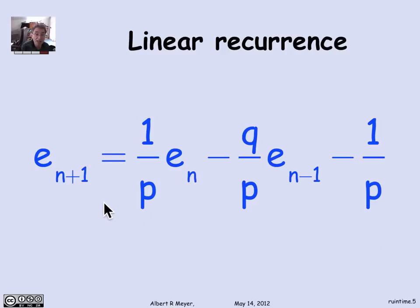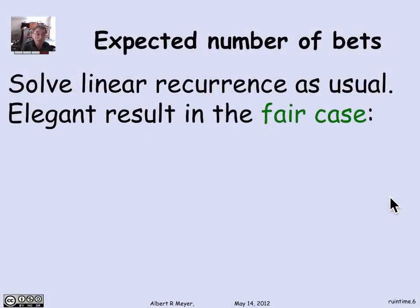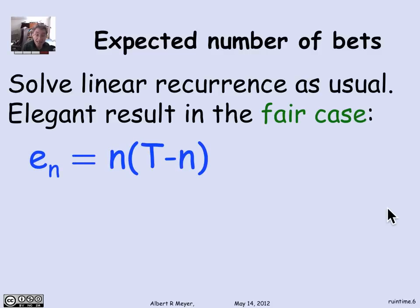It's a linear recurrence. We solve for E_{N+1} as a linear combination of the previous two values. This turns out to be a non-homogeneous linear recurrence — there's a minus 1 over p constant term, which we know how to handle. I'm going to skip the formal calculation of solving the linear recurrence, because we know how to do that. In the fair case, the formula we get for the expected time turns out to be a surprisingly elegant result.